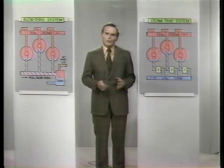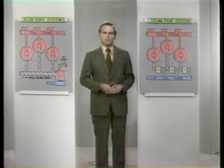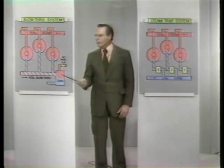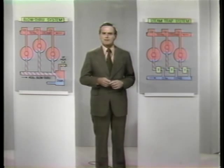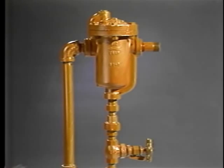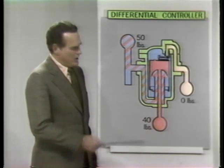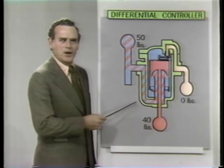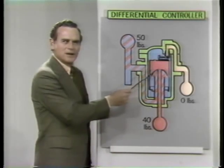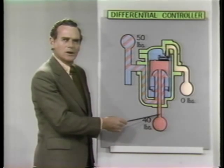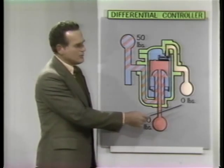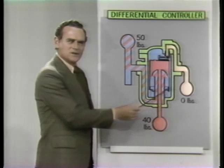Therefore, wouldn't it make sense to utilize the advantages of both a steam trap system and a blow-through system — to combine them into a new effective and efficient drainage device? Let's study what makes this all possible: the Armstrong Automatic Differential Condensate Controller. This dual control device employs an inverted bucket condensate mechanism, augmented by an integral controlled blow-through tube.